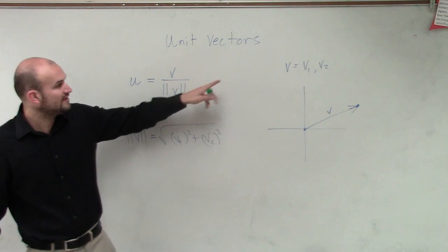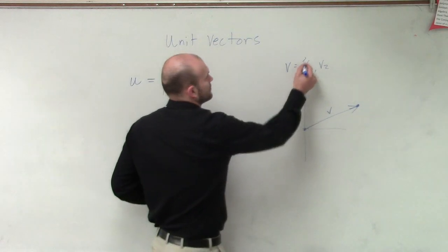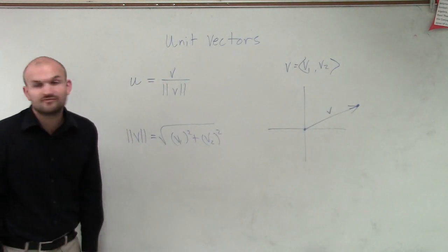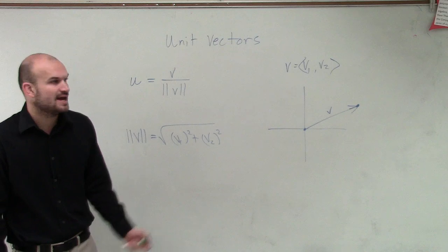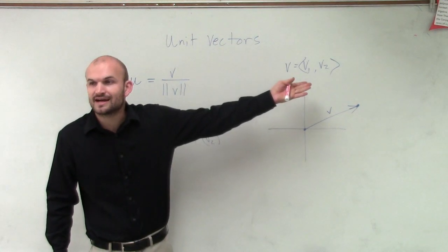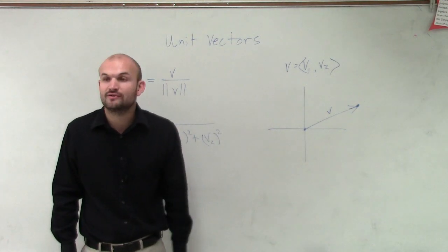And then remember, v represents two components, v1 and v2. So if you take those components and divide them by the magnitude, that's going to provide you with a unit vector.